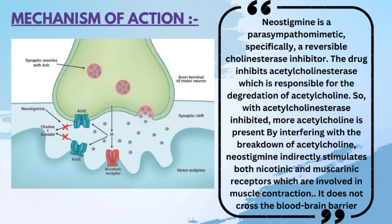Now, the mechanism of action. Neostigmine is a parasympathomimetic, specifically a reversible cholinesterase inhibitor. The drug inhibits acetylcholinesterase, which is responsible for the degradation of acetylcholine. With acetylcholinesterase inhibited, more acetylcholine is present by interfering with the breakdown of acetylcholine. Neostigmine indirectly stimulates both nicotinic and muscarinic receptors, which are involved in muscle contraction. It does not cross the blood-brain barrier.